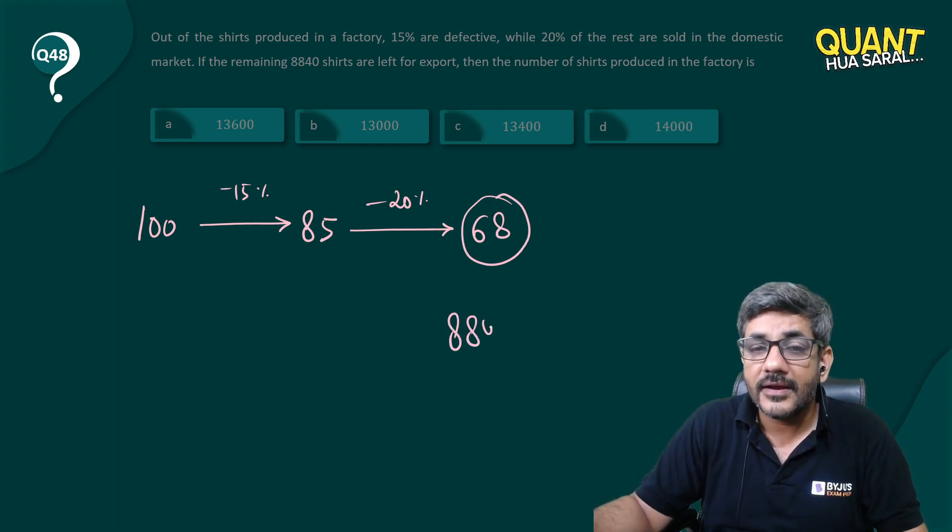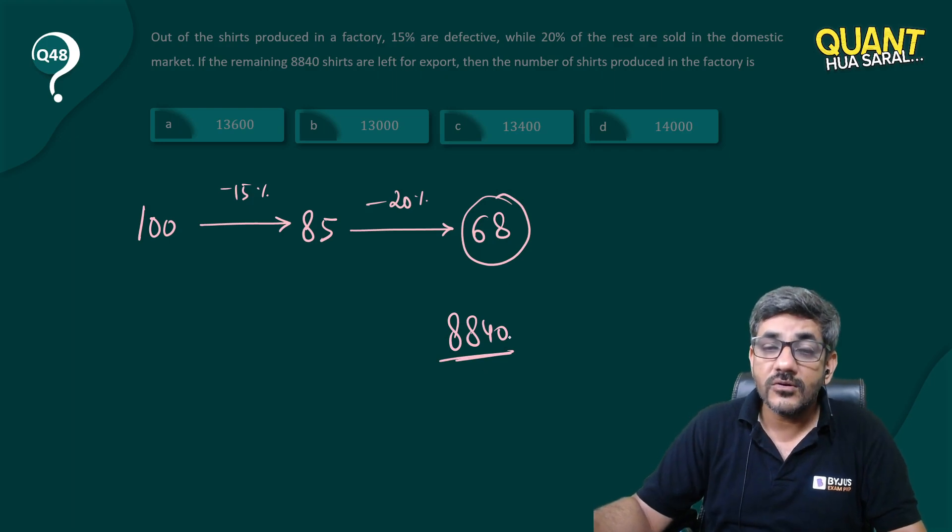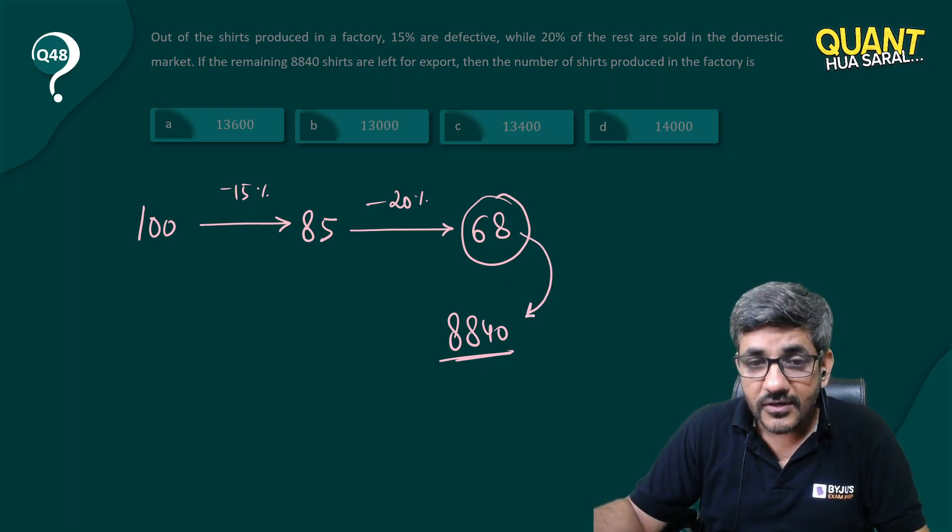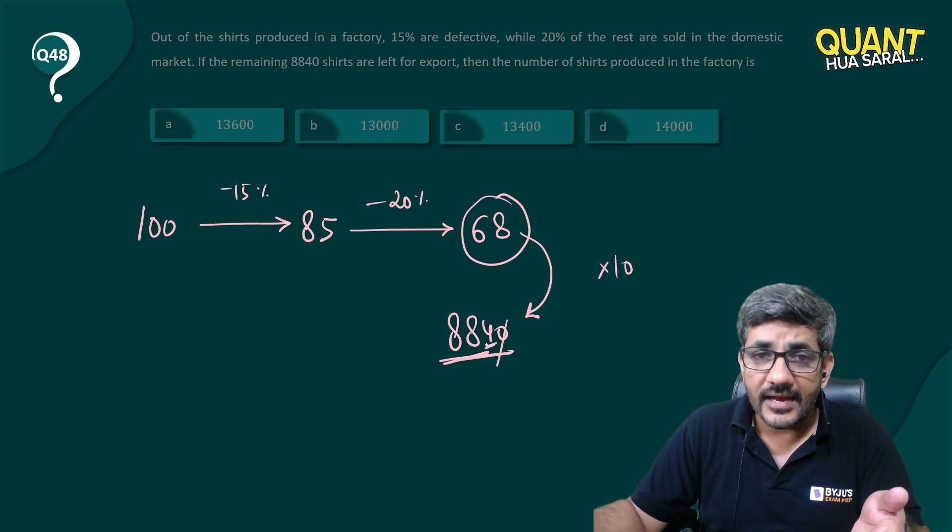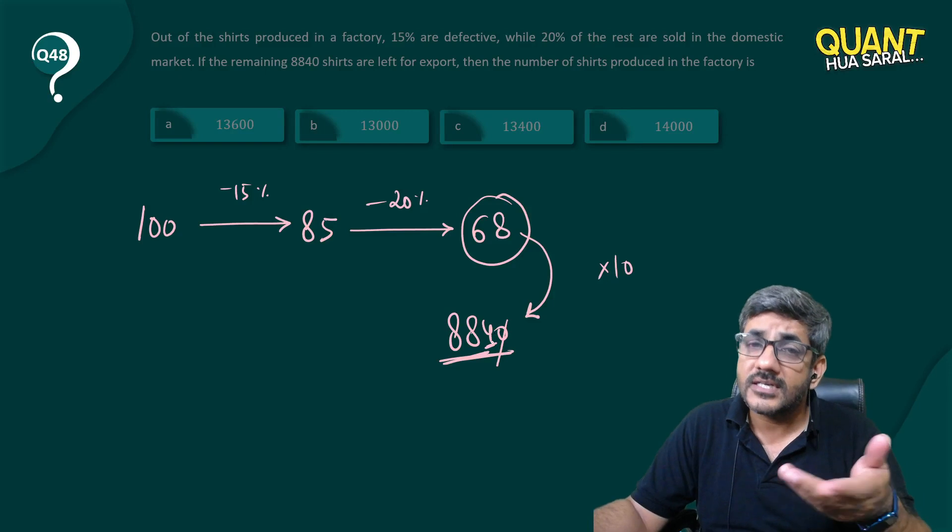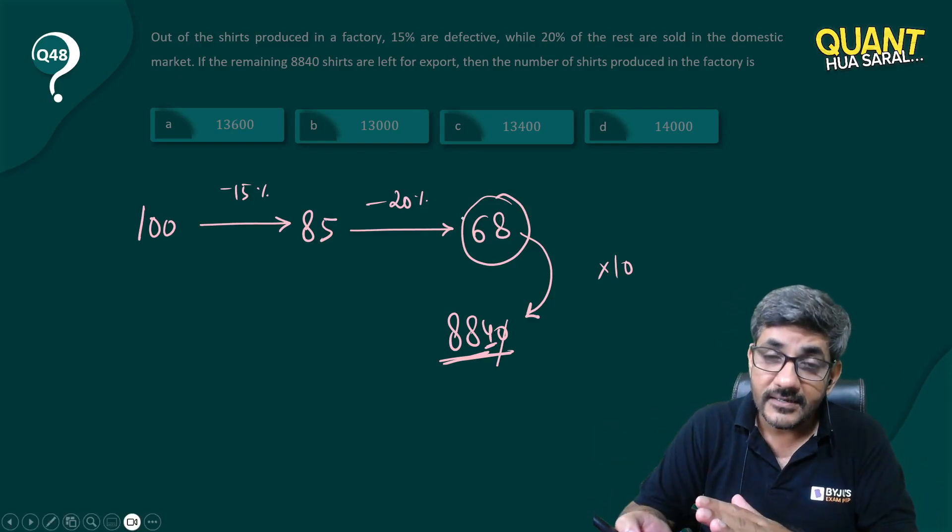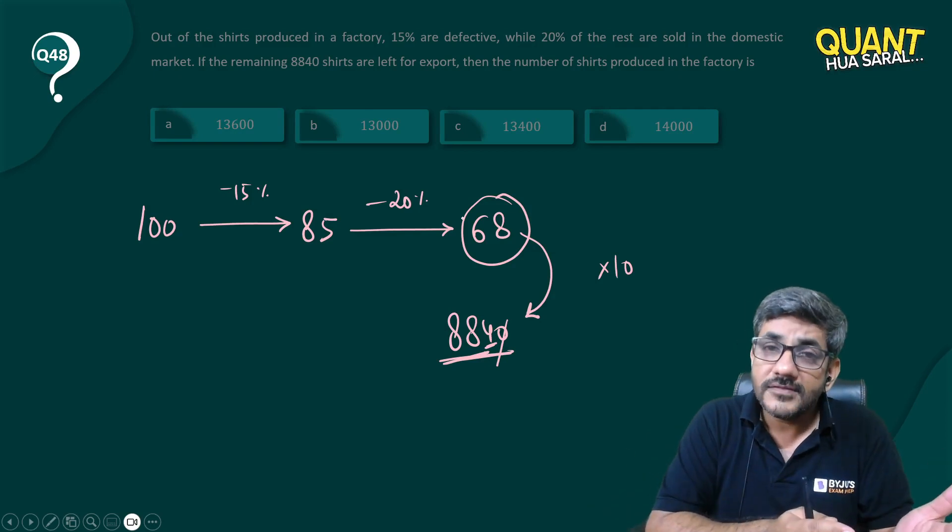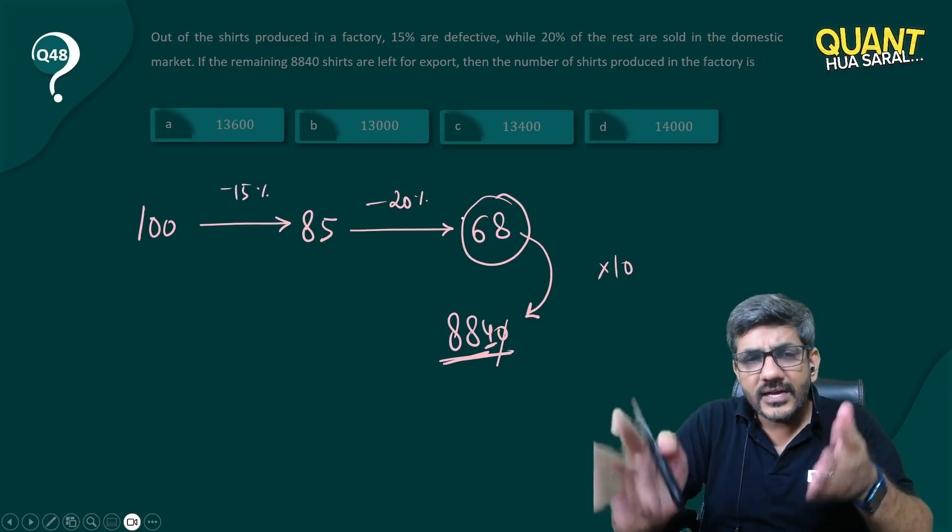But the question says 8840 are remaining. We are getting 68, question says 8840. I will just see how many times of 68 is 8840. Of course that 0 makes it 10 times and 68 into something is 884. So because there is a 4 at the end, most probably it is going to be 13 because it is more than 680, that is 10 times of 68. It is less than double of 68, so between 10 and 20 and ending with 4, most probably it will be 13.